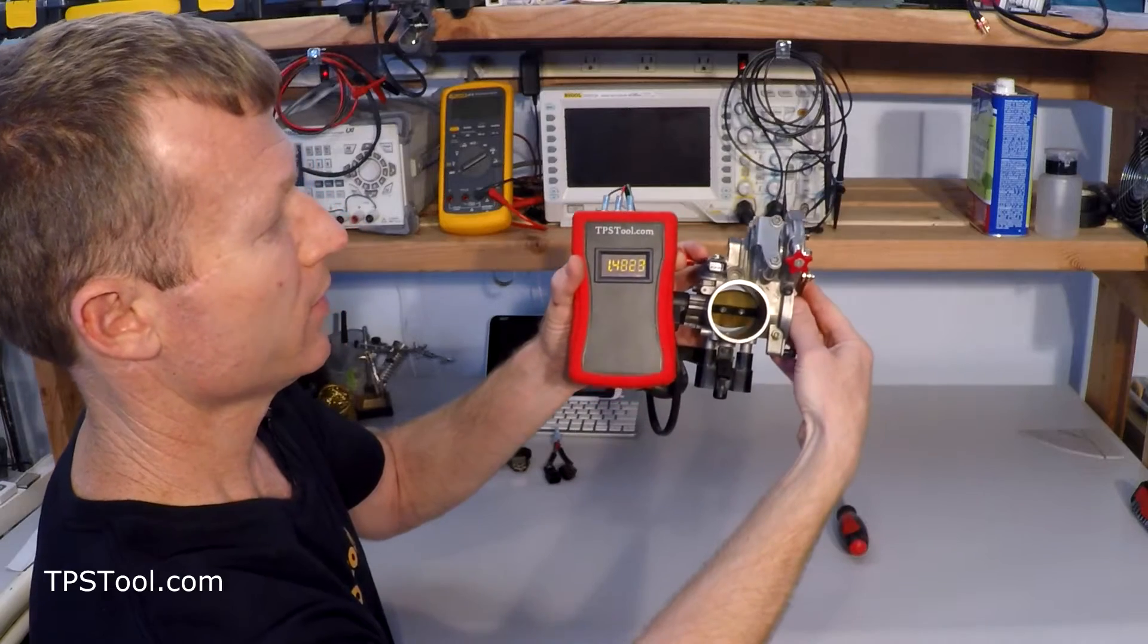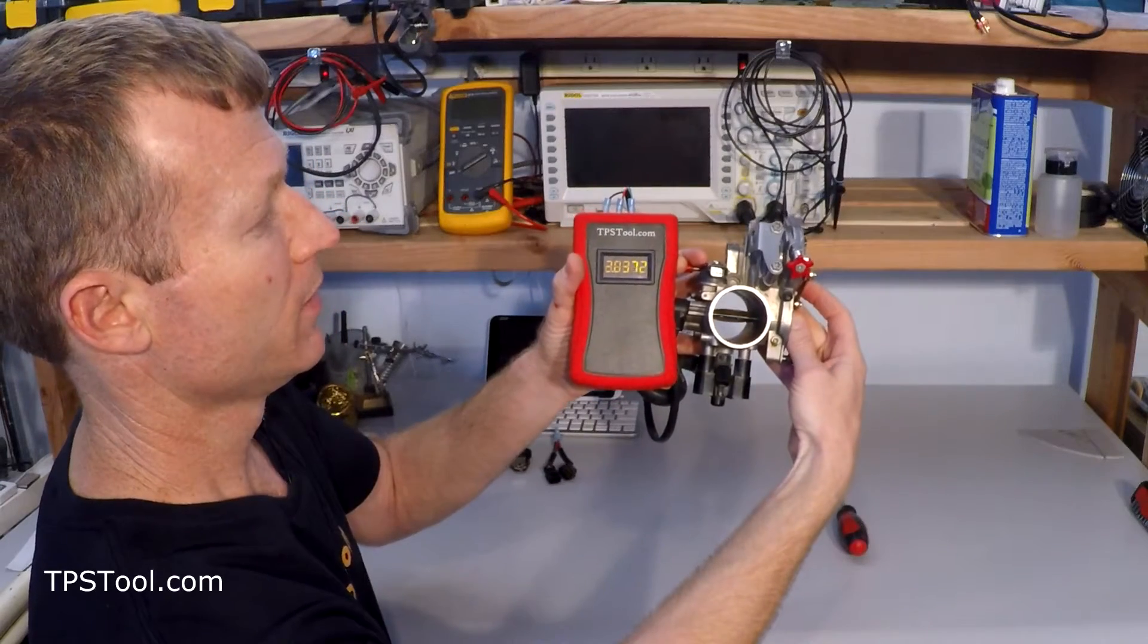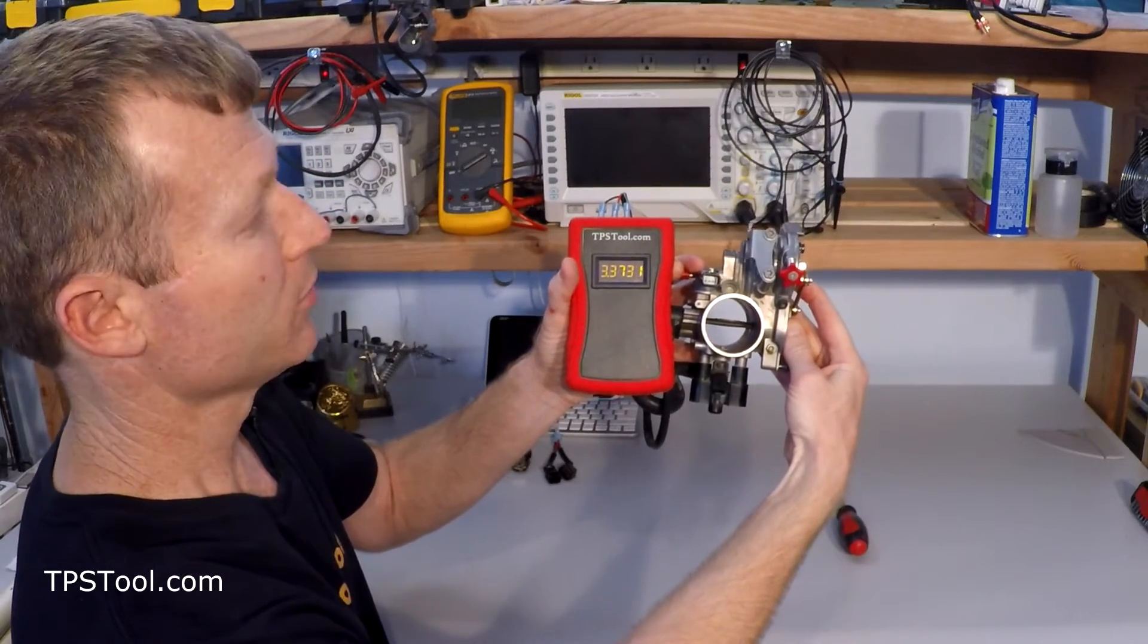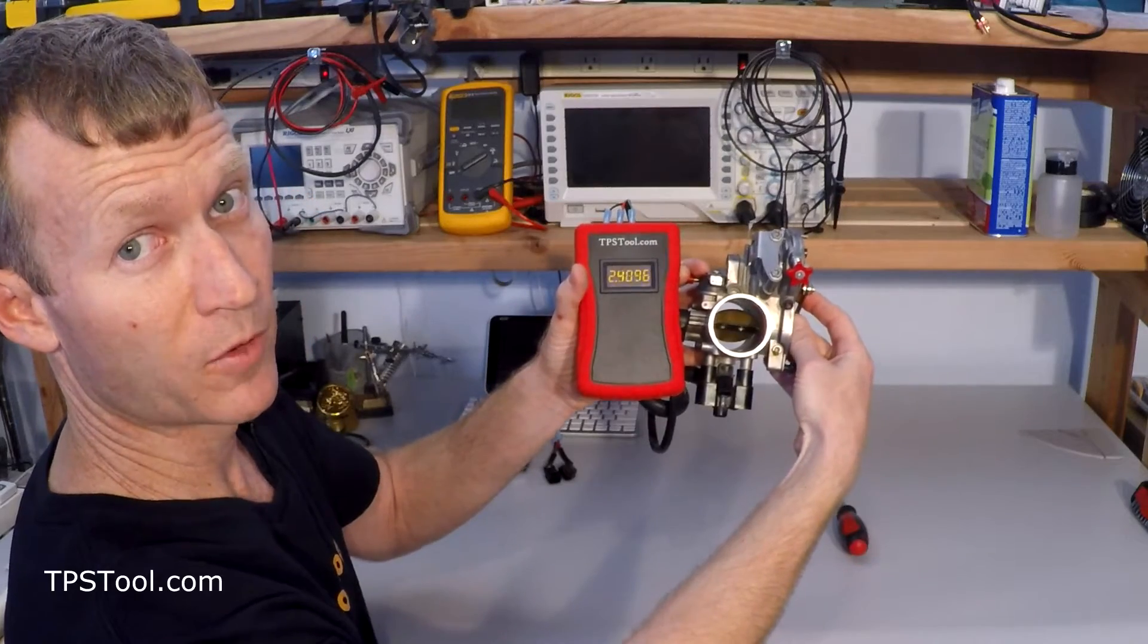This is what the computer sees. So you can see as I open the throttle, all the way to full throttle, the numbers rise steadily. And that's what the computer uses to determine how far open the throttle is.